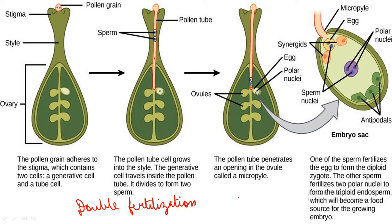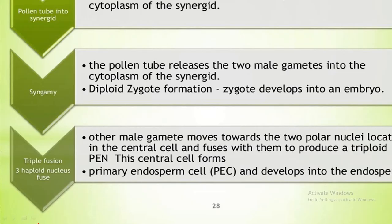The second male gamete fuses with the two polar nuclei or secondary nucleus in the central cell to form the triploid primary endosperm nucleus (PEN). The process is called triple fusion as three haploid nuclei are involved. After triple fusion, the central cell becomes the primary endosperm cell, which gives rise to endosperm, while the zygote develops into the embryo. As both fusions — syngamy and triple fusion — occur in the embryo sac, the phenomenon is termed double fertilization.